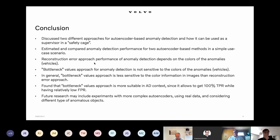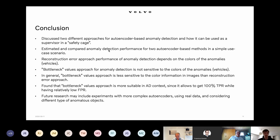To conclude, I've presented two different approaches of autoencoder-based anomaly detection on a high level. I discussed how it is used in the context of a safety cage, because it's important to understand how it can be used in the actual self-driving car architecture. It acts as a safety cage — we detect anomalies and trust or reject the output of our deep learning model.